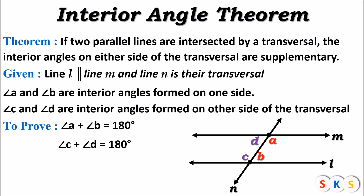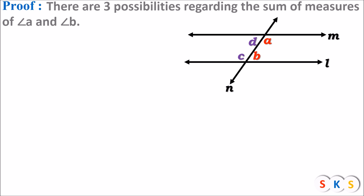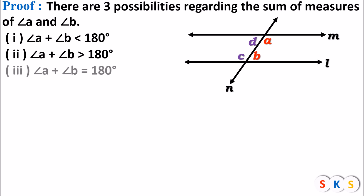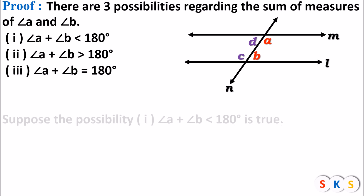I also have to prove that the second pair of interior angles is supplementary, that is angle C plus angle D equals 180 degrees. For the proof, there are three possibilities regarding the sum of angle A and angle B. The first possibility is angle A plus angle B is less than 180 degrees. The second possibility is angle A plus angle B is greater than 180 degrees. And the third possibility is angle A plus angle B equals 180 degrees.